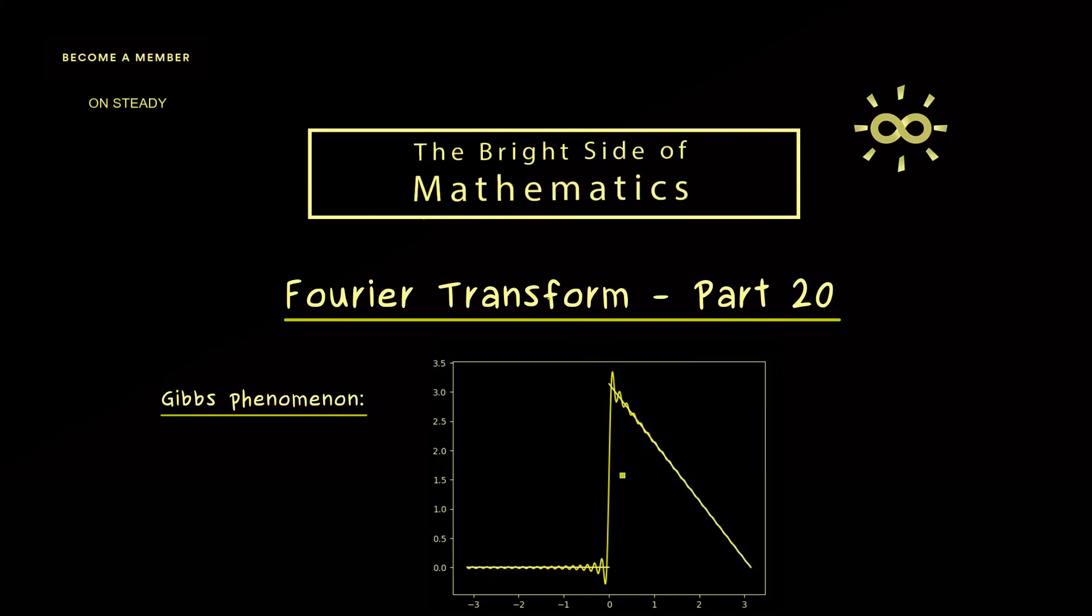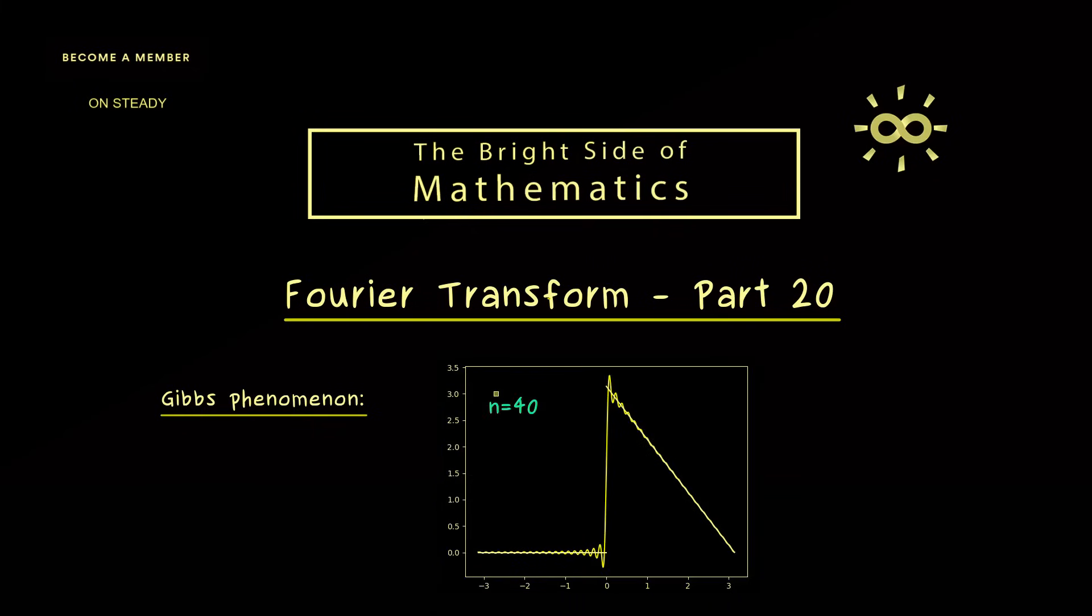However, strangely enough, this is not correct for points that are close to the jump point. There we see a big gap still. Now we might expect that this overshooting we see gets smaller and smaller when we increase our n.